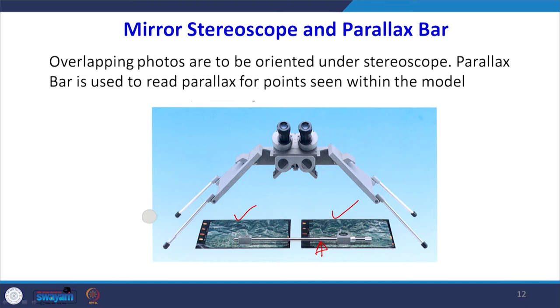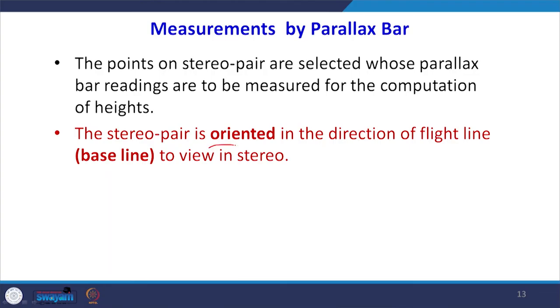The parallax bar is kept on top of the photographs, and we look through the magnifying lenses — the left one and the right one. Points on the stereo pairs whose parallax bar readings are to be measured are selected. The stereo pair must be properly oriented, meaning the two photographs are aligned in the same direction as the flight line. This process is known as base lining of the stereo pair.